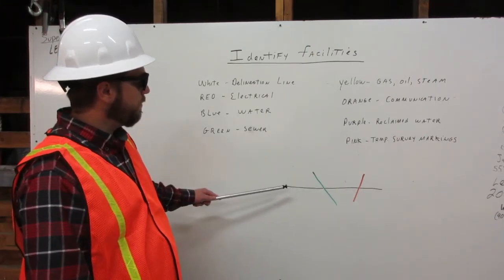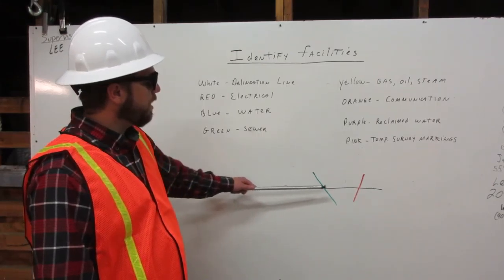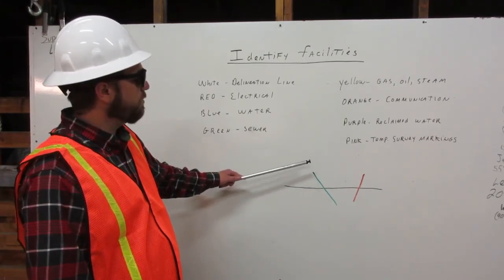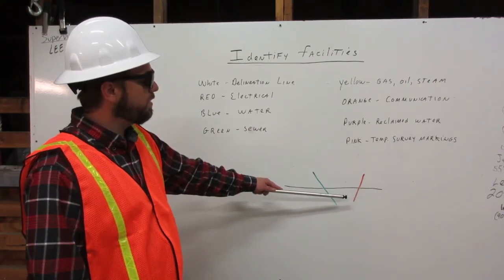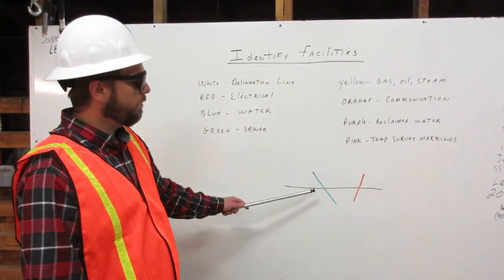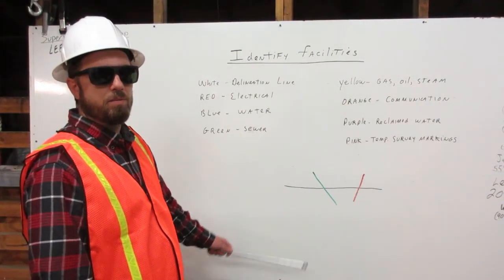So here we have our delineation line. It is written in black because we are writing on a white board, and then here we have a red line which is an electrical facility and then a green which is a sewer facility. Thank you.